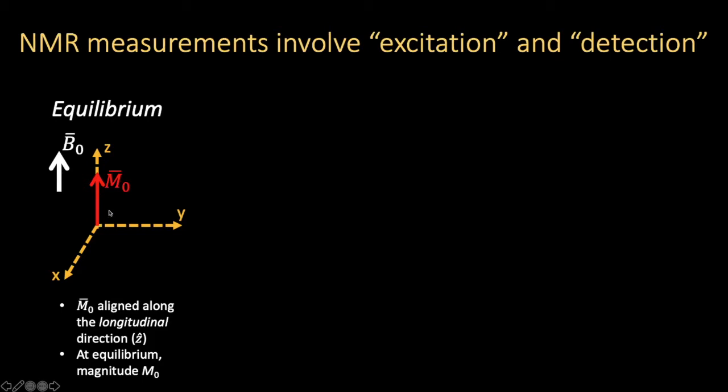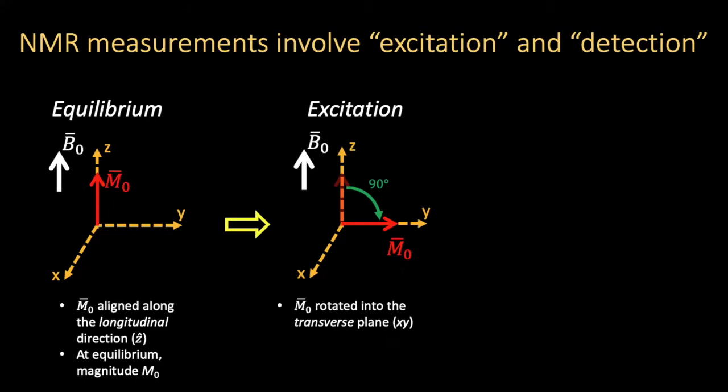When we put an object in a magnetic field and the magnetic dipole moment aligns with it, we say it's aligned along the longitudinal direction and it achieves an equilibrium magnetization, which we refer to as M-naught. But having a static magnetic field in our object is not so useful — we actually need to perturb it away from this static state in order to be able to see something of interest. So we do this with what's called excitation, where we rotate our magnetization down into the transverse plane — the XY plane — which is orthogonal to B0.